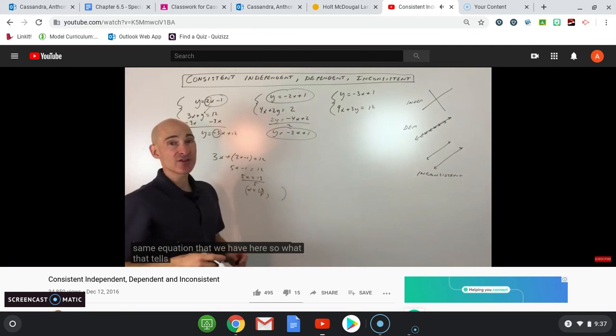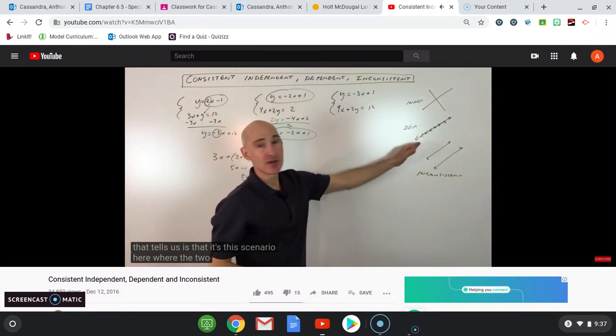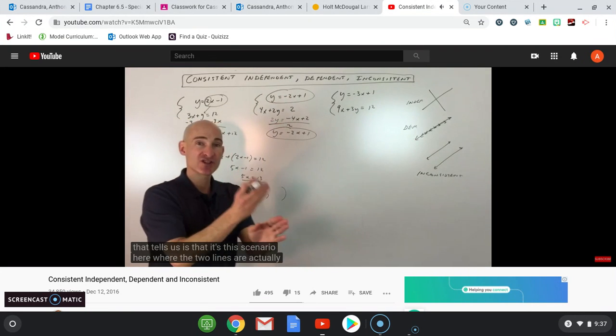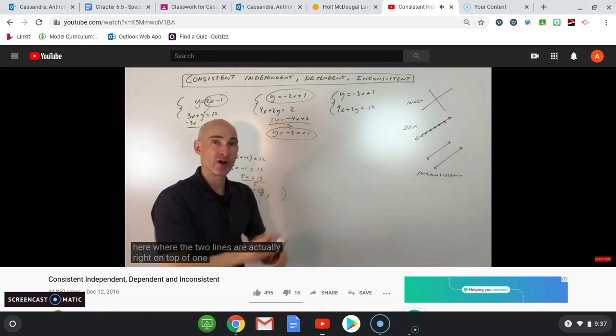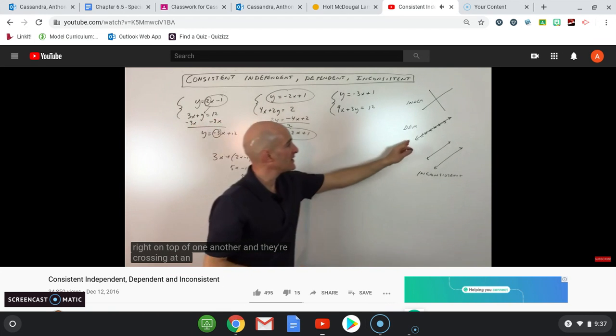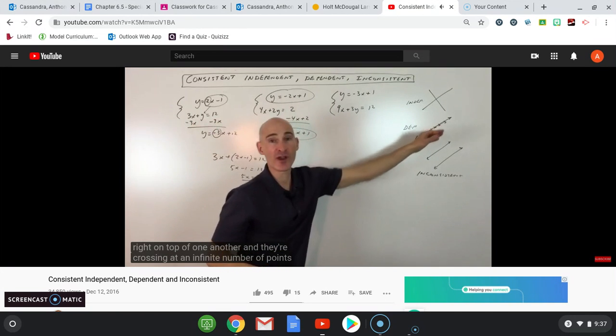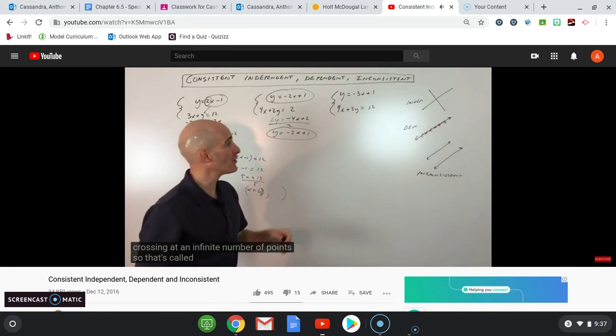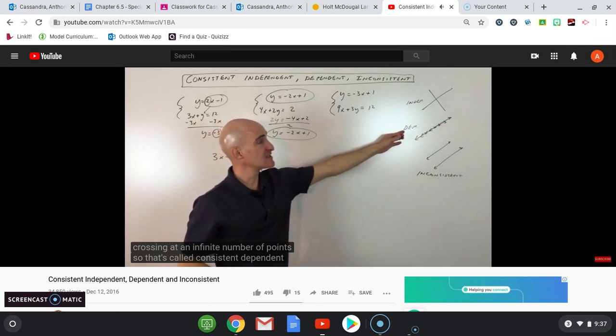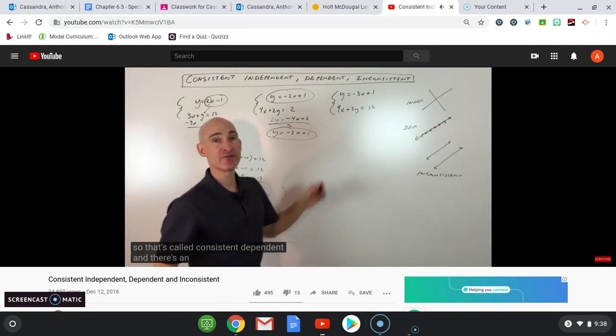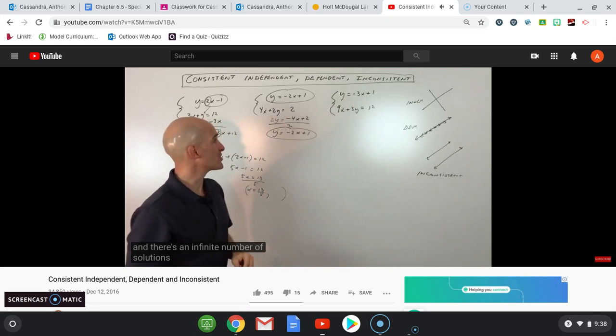So that tells us it's the scenario where the two lines are right on top of one another, crossing at an infinite number of points. That's called consistent dependent, and there's an infinite number of solutions.